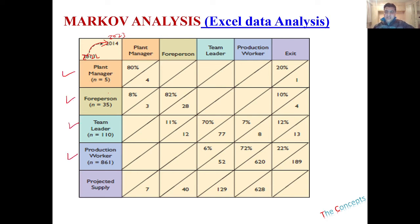These are the four levels of jobs in your organization — you can have any number of levels and the concept will remain the same. Because it's a matrix, the plant manager, foreman, team leader, and production worker appear both vertically and horizontally. At the end of the matrix we have the projected supply, which is the number of people you will have at the end of a certain time, and then the exits — the number of people expected to leave during that duration.